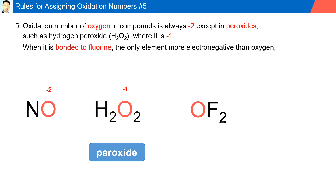When oxygen is bonded with fluorine — the only element more electronegative than oxygen — the oxidation number of oxygen is positive. In this example, we have OF2, where the oxidation number for oxygen is plus two.